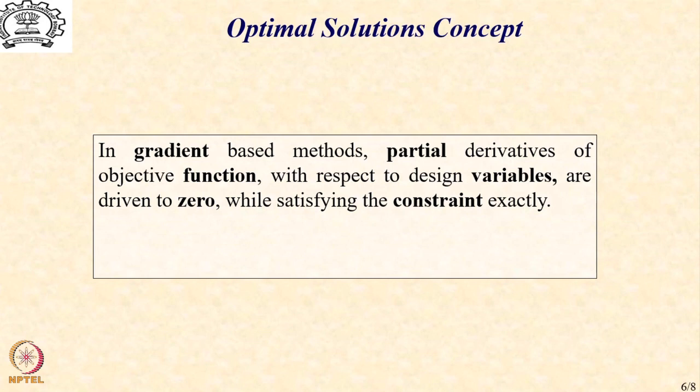So, we now get as many number of equations as there are number of design variables, which will be algebraic equations. And when we solve those algebraic equations in terms of the design variables, we get a solution for the design variables which optimizes that is either maximizes or minimizes the objective function. And all this must be done while satisfying the constraint exactly.